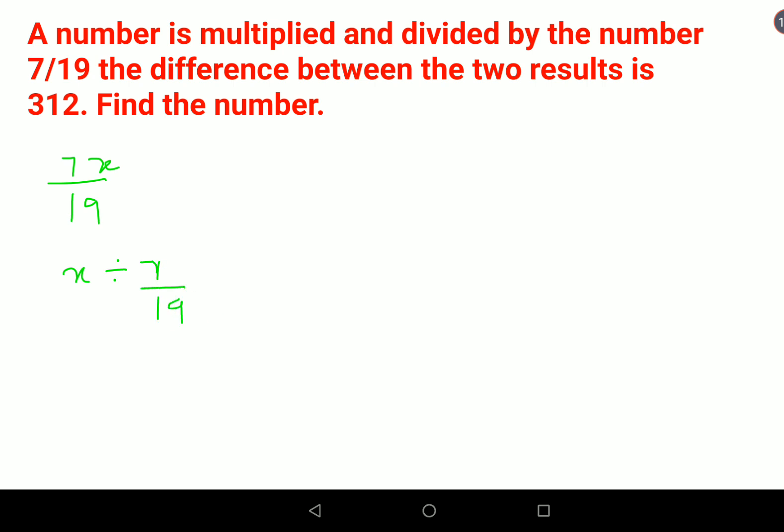Now when you have a division sign, we follow the KCF rule. Keep the first number as is, change the division sign to multiplication, and flip the fraction. So the reciprocal of 7/19 is 19/7. This is the second part when it is divided.